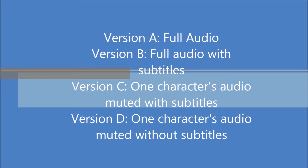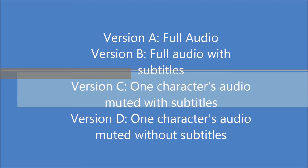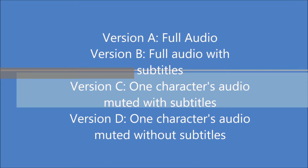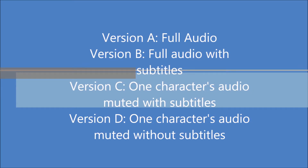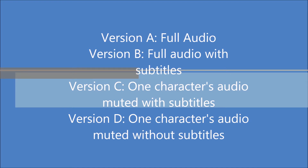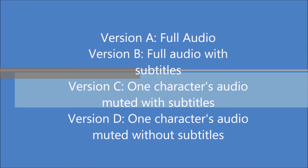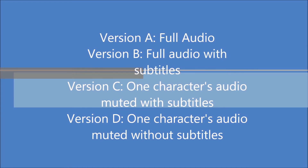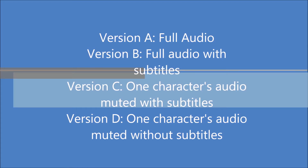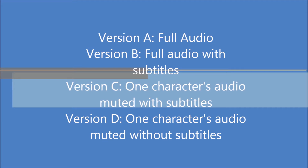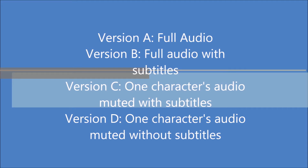Version A has the full audio and version B has subtitles in addition to the full audio. In version C, one of the characters is muted and there are subtitles. Version D also has one character muted, but it is without subtitles.